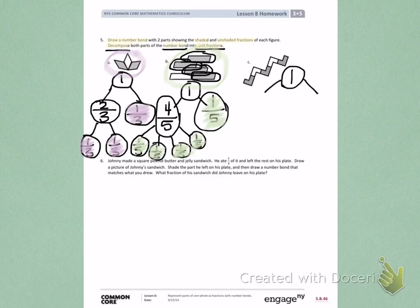Let's find the important information that the problem is asking us to solve. First, we know Johnny made a square. Then, he ate one-third of the square he made. We need to draw a picture of Johnny's sandwich. We need to shade what was left on his plate, not what he ate, but what he left. We need to draw a number bond, and we need to answer what fraction of the sandwich did Johnny leave on his plate. So, let's start by doing our best to draw a square.